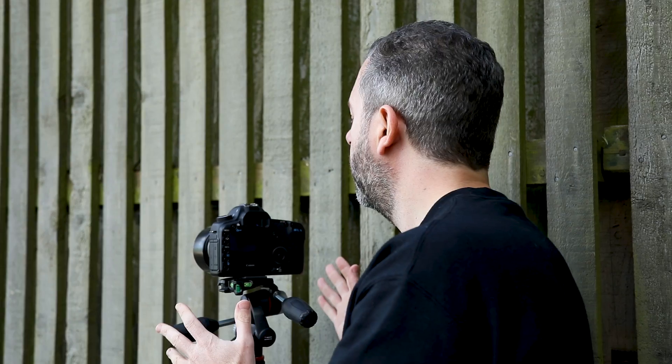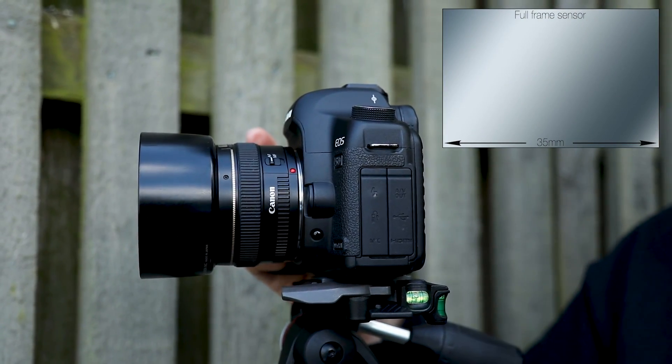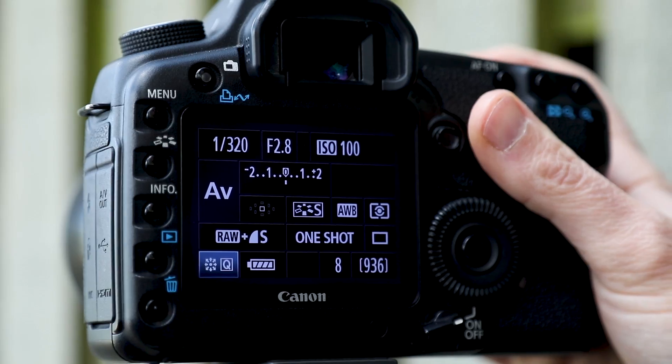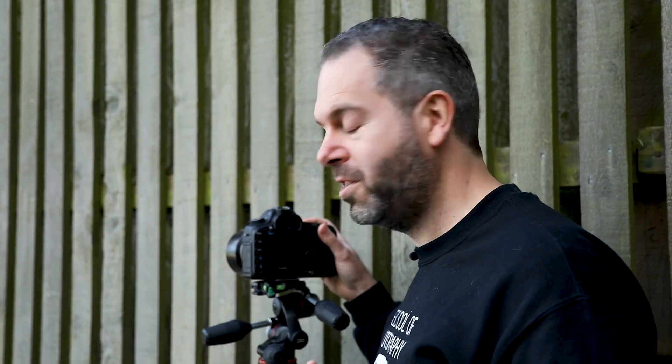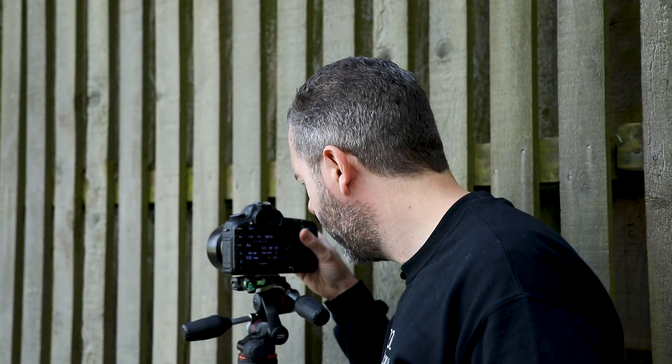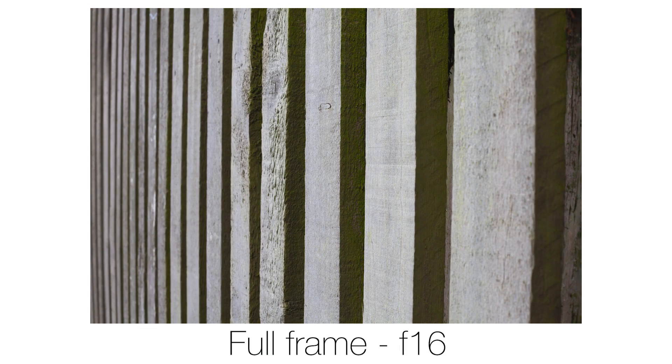I'm going to take a shot of this fence here because it goes off into the distance, and I'm really close as well, so that's going to really exaggerate depth of field. I'm going to focus on the same spot in every single shot. On here I've got the full frame camera — a Canon 5D Mark II — and I'm using a 50mm lens. I'm going to take a picture at f2.8, then at f5.6, and one last picture at f16. That gives us a good range.